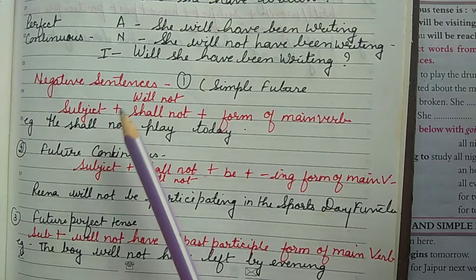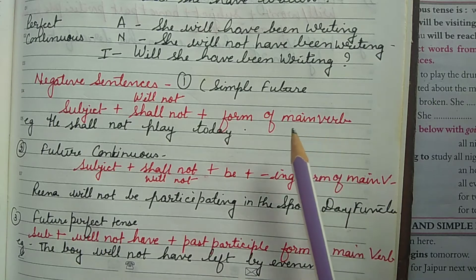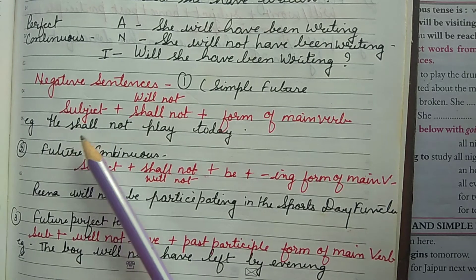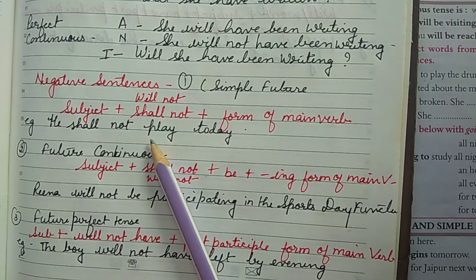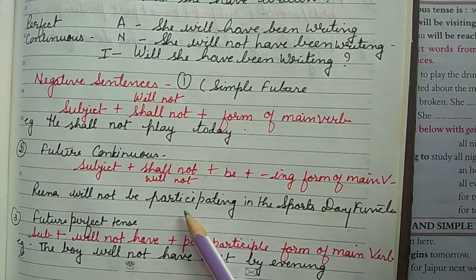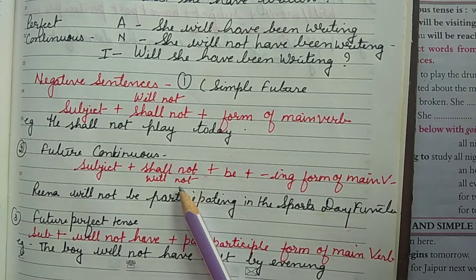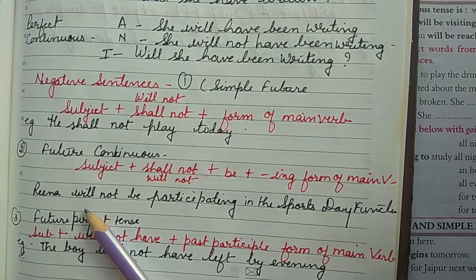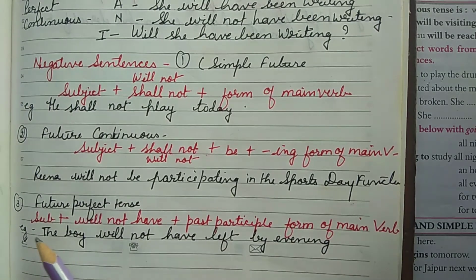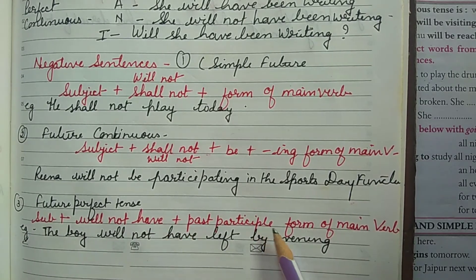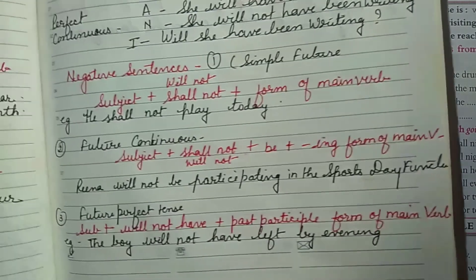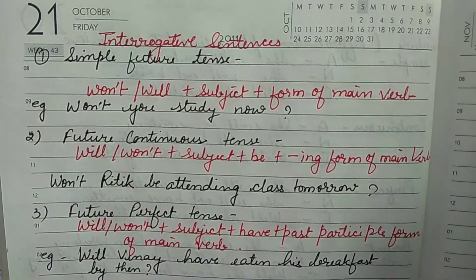Negative sentences use the structure: subject + shall not/will not + root form of the verb. For example: 'He shall not play.' For the future continuous negative: subject + will not + be + ing form — 'Rena will not be participating in the sports day function.' For the future perfect negative: subject + will not + have + past participle — 'The boy will not have left by evening.'